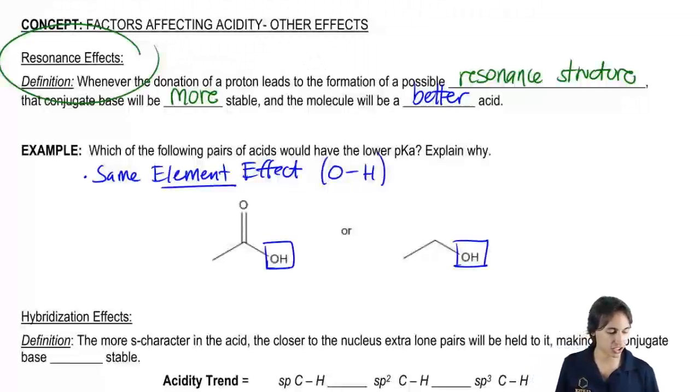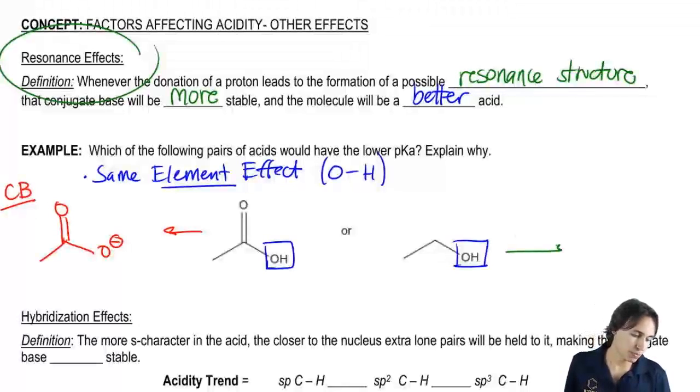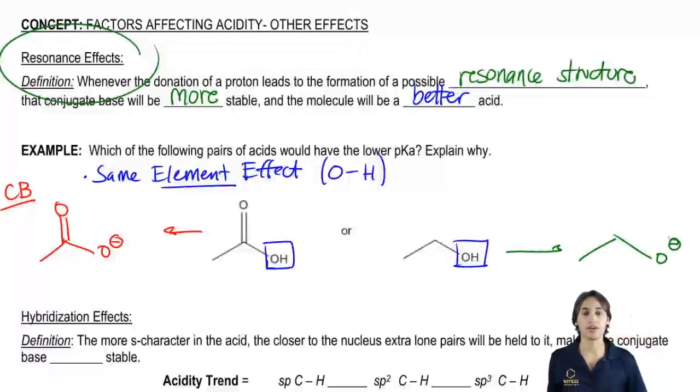It's the fact that – let's look at the conjugate bases. The conjugate base for my carboxylic acid looks like this, O negative. The conjugate base for my alcohol looks like this. So which of these is going to be the one that's more stable?